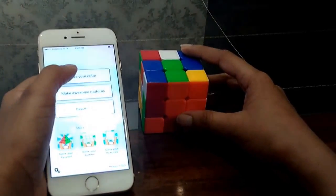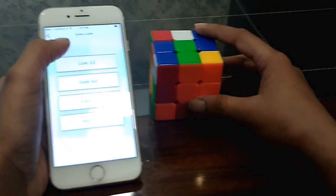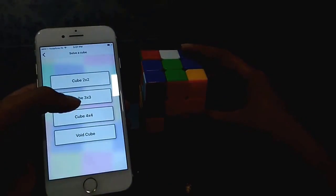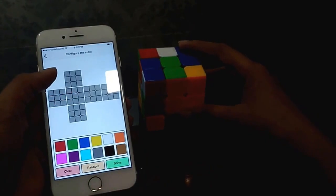We are going to choose solve your cube. Now there are multiple cubes such as 2 by 2, 3 by 3, 4 by 4, and void cube. We are going to choose 3 by 3.